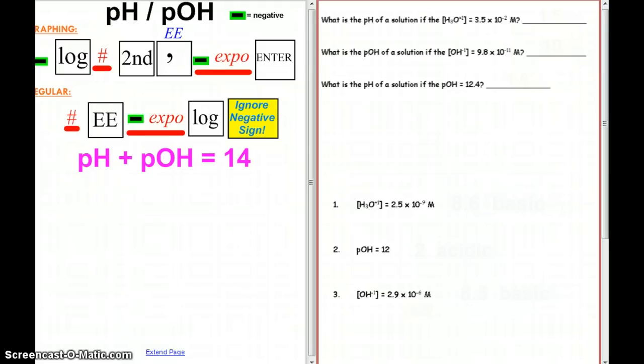And then that hashtag, the number there, you want to type in 3.5. Then you'll hit second comma, so you'll see the capital E show up. And then the negative exponent, negative 2. And hit enter. And you should see a number like 1.45 something. But always trying to use our sigfig friends, I just need to answer 1.5. And pHs are not labeled.